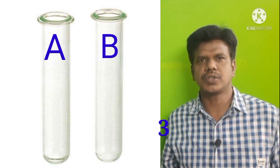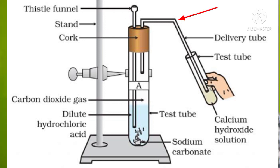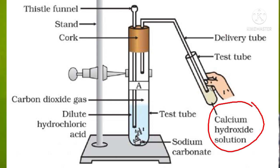Take test tube A and arrange the apparatus as shown in the figure. Attach the test tube to a stand and close it with a two-hole rubber cork. In one hole place a thistle funnel, and in the other arrange a delivery tube. The other end of the delivery tube should be placed in another test tube containing lime water.